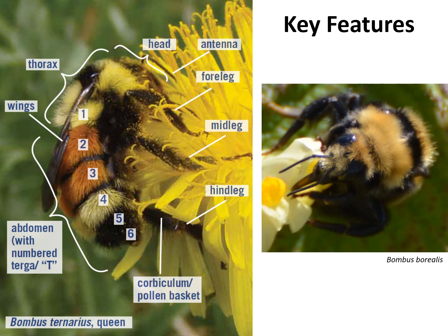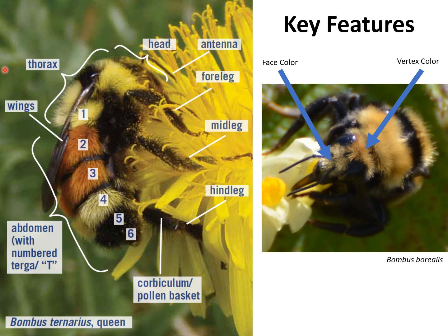Once you have learned to differentiate bumblebees from other insect species, you will want to know how to identify bumblebees to species and sex. Like other insects, the bumblebee body is divided into three parts: the head, thorax, and abdomen. Starting with the head, the color of the face and vertex are both key traits. The face is the area around the bee's antennae and eyes. The face can be either yellow, black, or intermixed yellow and black. The vertex is at the top of the head, almost like the nape of the neck. The vertex can also be yellow, black, or intermixed yellow and black.